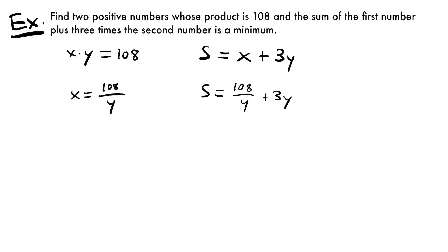Before we take the derivative, let's ask what values of y make sense for this scenario — what is the domain? If we think about it, x and y have a product of 108. We know from the problem that both must be positive numbers, so we can completely rule out negative values for y. What about zero? If y is zero, you'd have zero times some value for x, and no matter what, you'd end up with zero — not 108. So zero doesn't work. But values larger than zero would be fine.